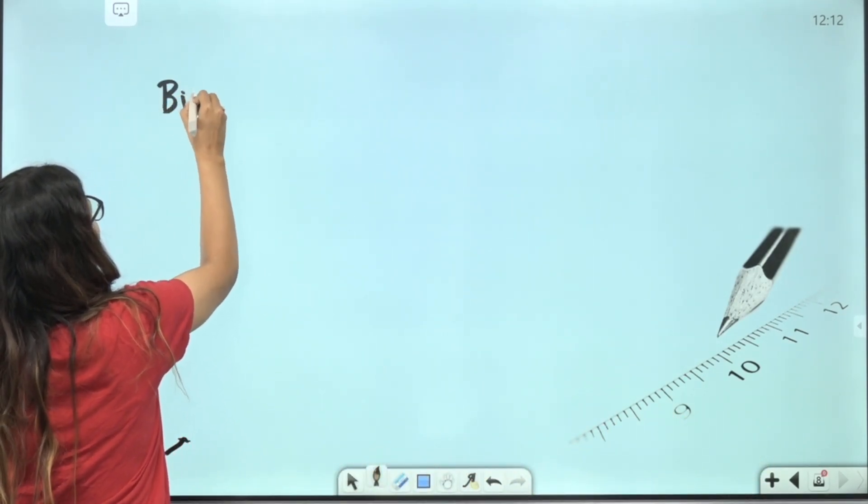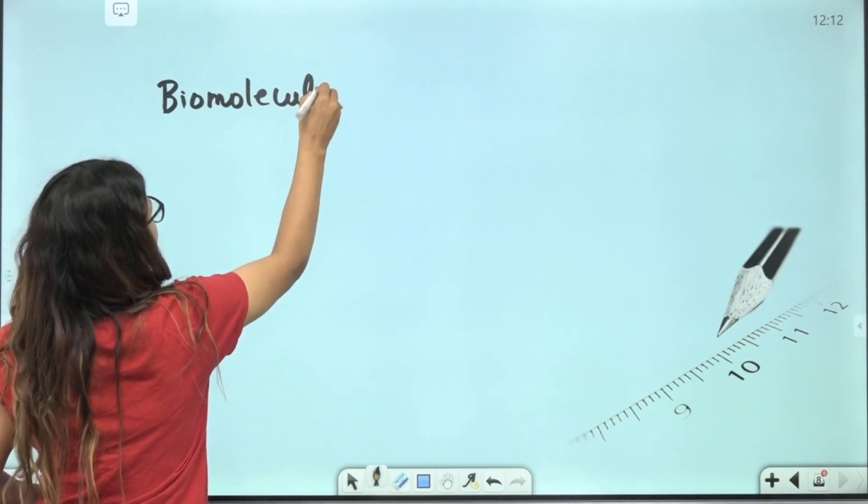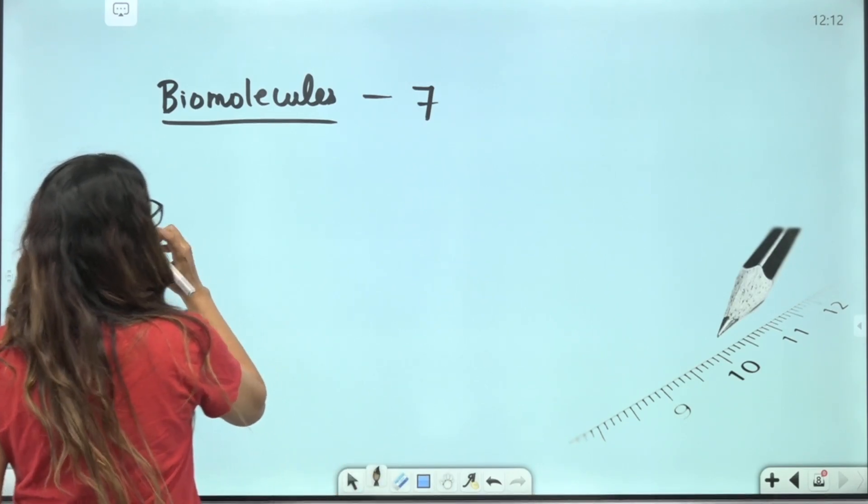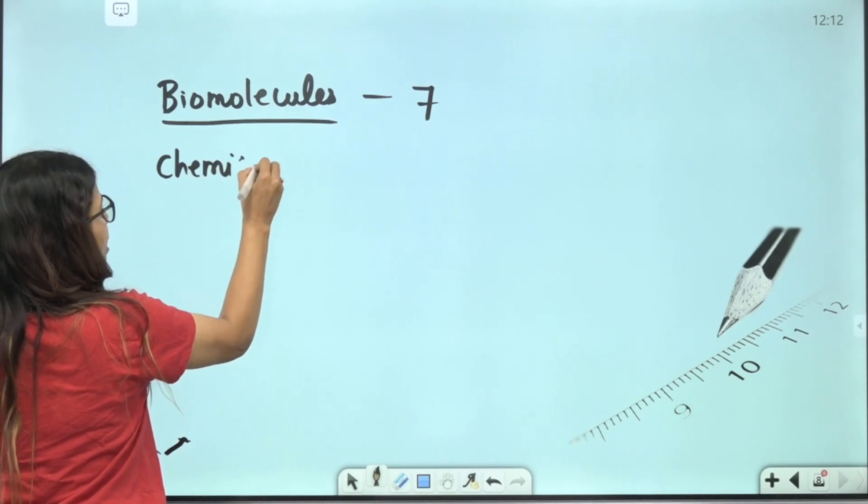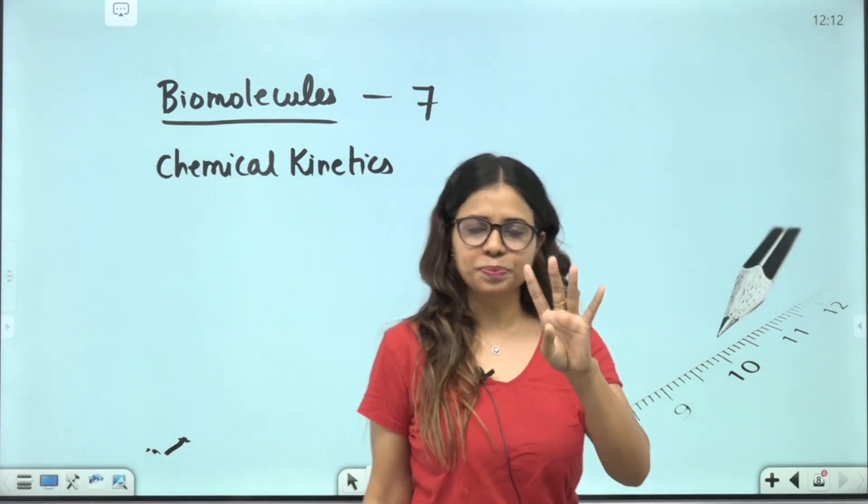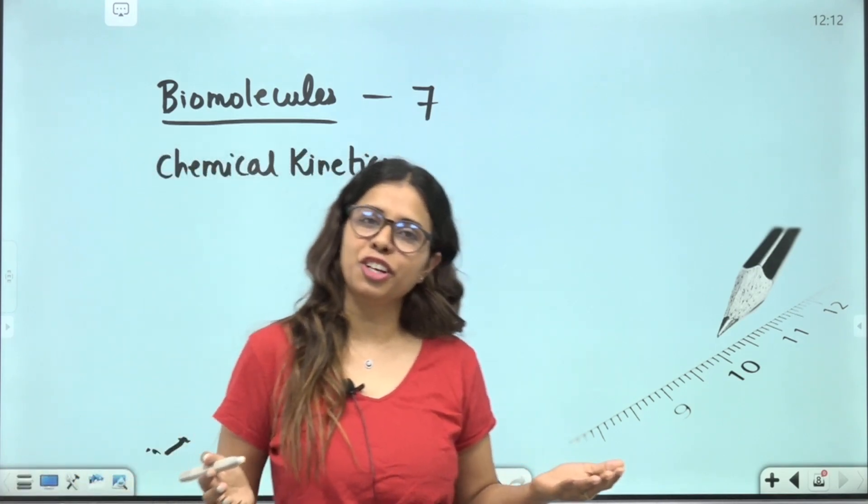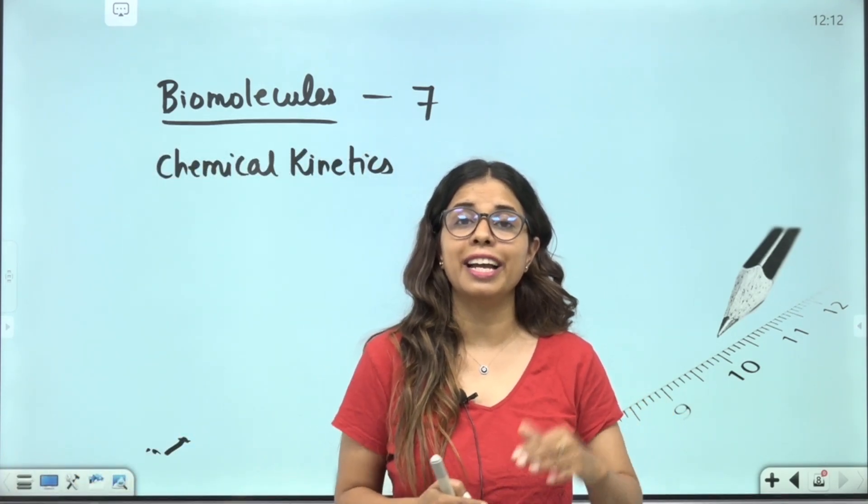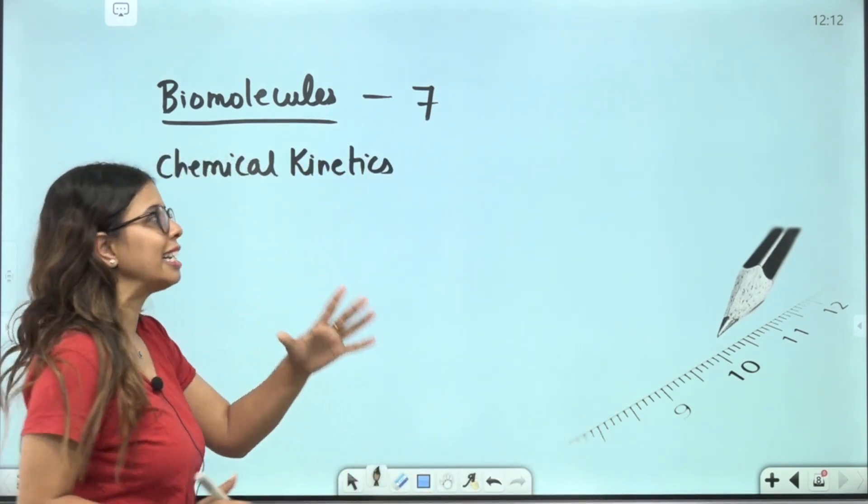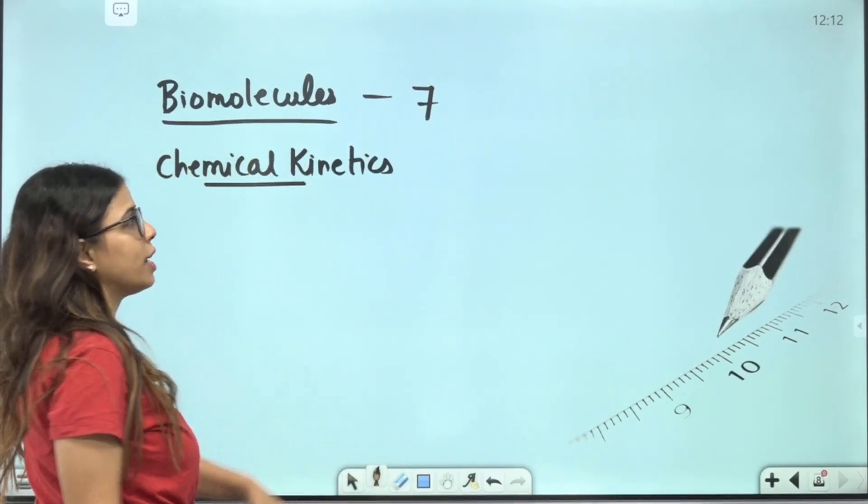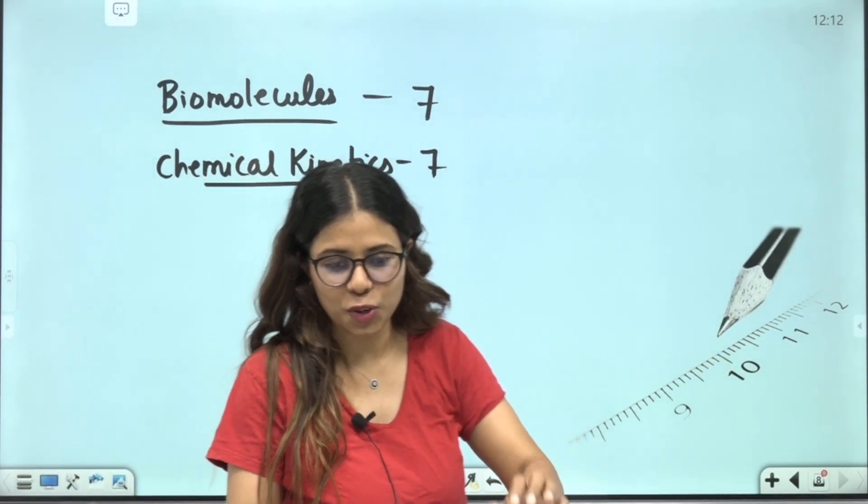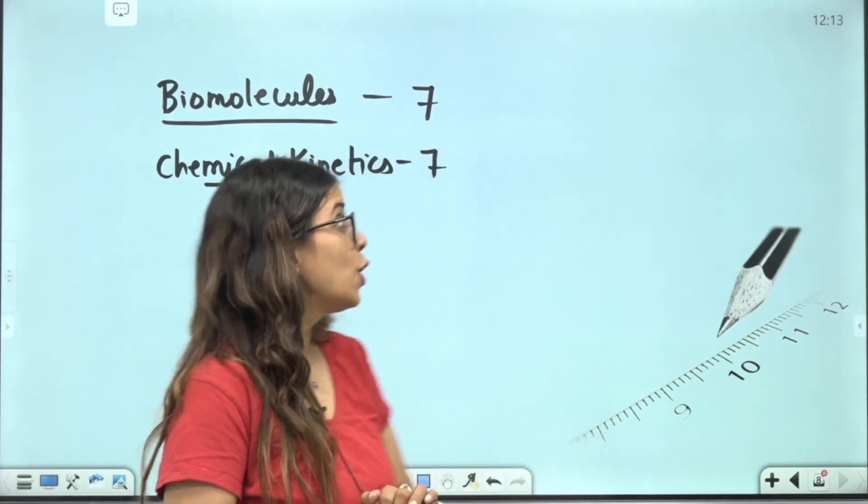So the biggest chapter is your biomolecules and this biomolecules chapter is very important to cover. It is a very big chapter in which I know 100% that in chemical kinetics, there will be questions from at least two formulas. I have already uploaded this formula sheet. So if you have a question from zero order or first order reaction rate constant or half-life, do PYQs, there will definitely be a question from that.